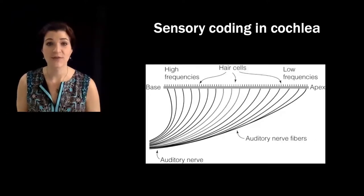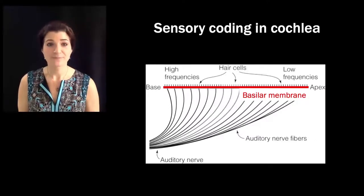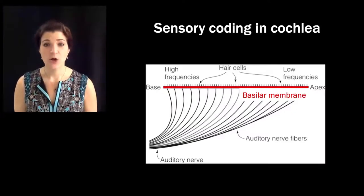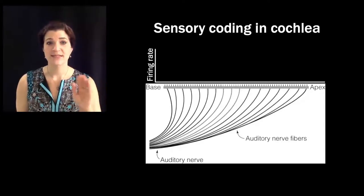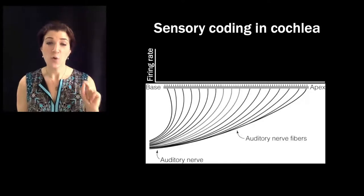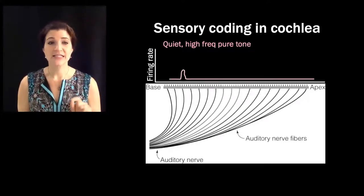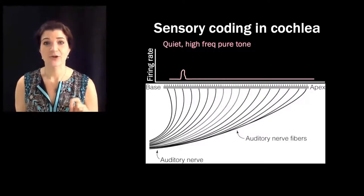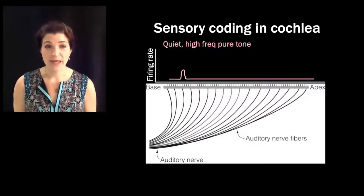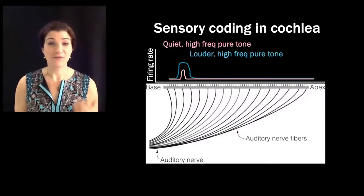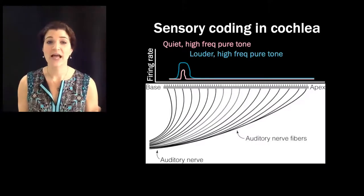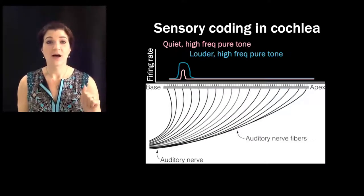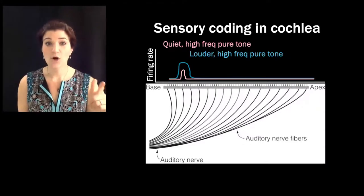Using a schematic of the basilar membrane, we can map out how various regions respond to different types of notes by drawing lines indicating the firing rate of auditory hair cells from base to apex. A very quiet, high-frequency pure tone produces a small increase in firing rate in a small group of cells near the base. Turning up the volume increases the firing rate of those cells near the base, but also a larger number of hair cells responds — representing both rate coding and population coding.